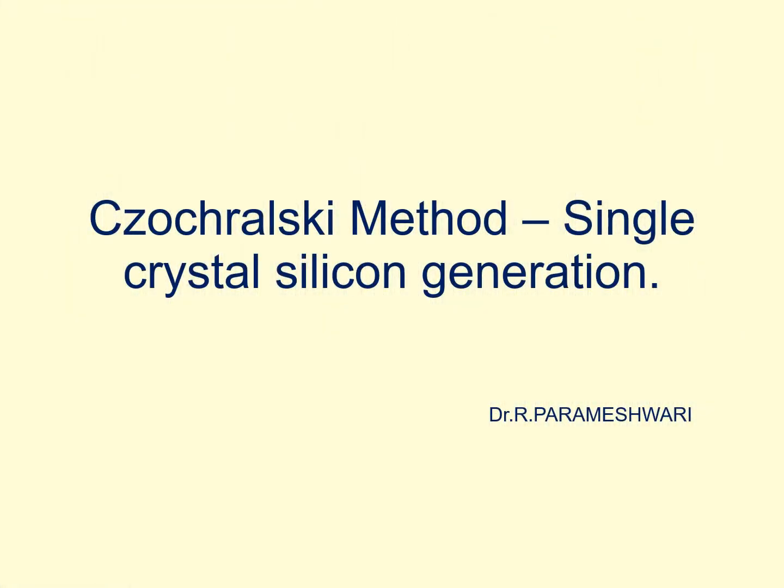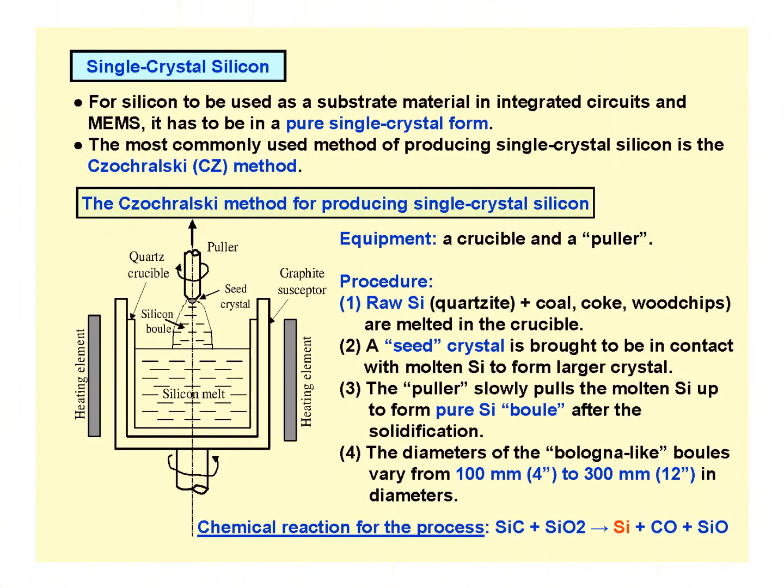Good morning everyone. In this video we are going to see how single crystal silicon is made using the Czochralski method. In the last video we saw why silicon is the most preferable material for MEMS fabrication, and now we will see how single crystal silicon is generated from raw silicon. This process is called the Czochralski method.